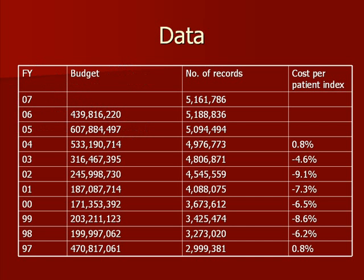Illustrated here is the data provided by the Department of Veterans Affairs. The information was provided on October 16, 2007. As you can see, the data provided stretches across a decade of fiscal years and includes the budget of the Office of Information, number of records in VISTA, and the Veterans Health Administration's cost per patient index.